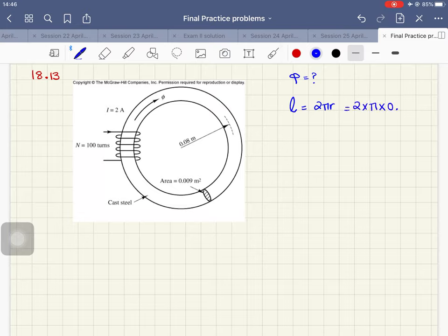So if I want to find that, that would be 2 multiplied by pi multiplied by 0.08. And that would give me 0.50265 meter.